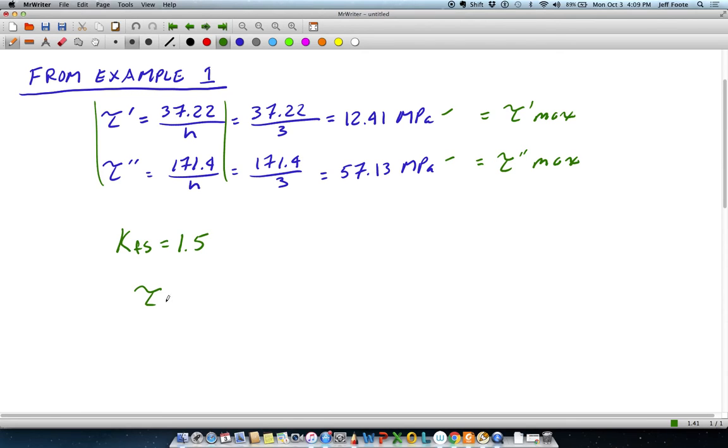So basically now, the alternating shear stress is going to be equal to 1.5 tau prime max times KFS. That calculation yields 9.31 megapascals. And a similar calculation for the double prime, the indirect shear stress. That one yields 42.85 megapascals.